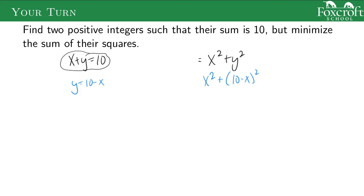If we subtract x from both sides of the constraint, y equals 10 minus x. So we can plug that in, and now our sum equation is just in terms of x. Now we can actually do the process of finding the answer. Go ahead and pause the video and find your own answer — I'll show you the answer in three, two, one.